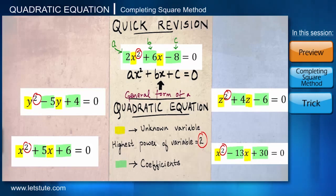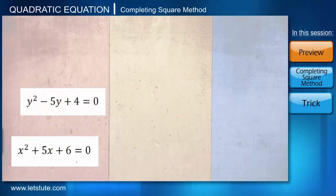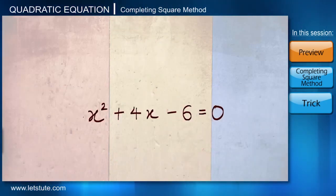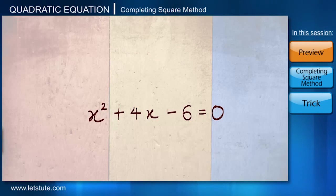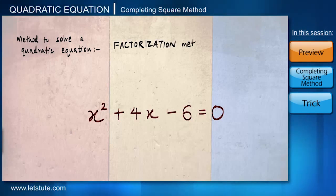Okay, so let me take one such quadratic equation: x² + 4x - 6 = 0. And if we have to solve this quadratic equation, which means solving for the value of the unknown variable x, we know till now just one method to solve it. And that method is called the factorization method, which we dealt with in our previous session.